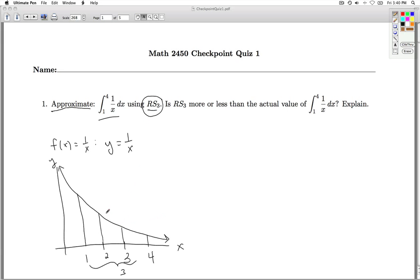Now, RS3, since we're using the right endpoint, we're going to look at the right endpoint of each of these three subintervals, and use that function value, and draw from right to left. So we're going to approximate the area under the curve between 1 and 4 by finding the area of these three rectangles and adding them up.